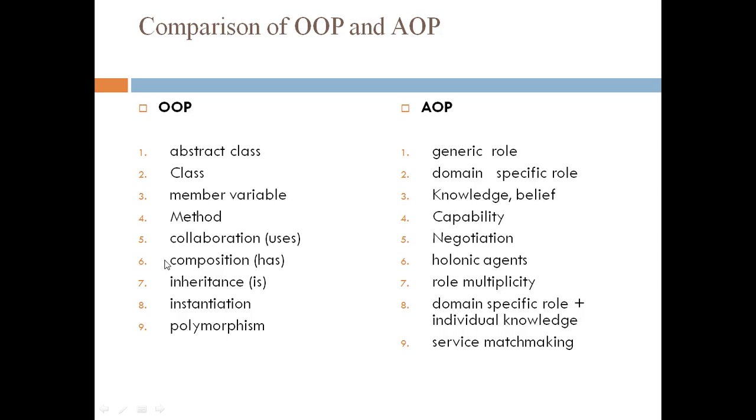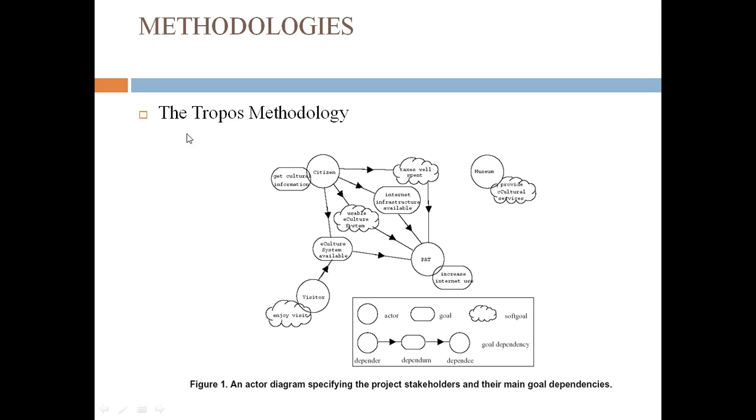This is an example or diagrammatical view of the TROPOS methodology. An actor diagram specifying the project stakeholders and their main goal dependencies. These are the actors, these are the goals, these are the soft goals: a depender, dependem, the dependee, then the goal dependency. This is a short example of employing the soft goal and actor to make the TROPOS methodology which specifies the project stakeholders and their main goal dependency.